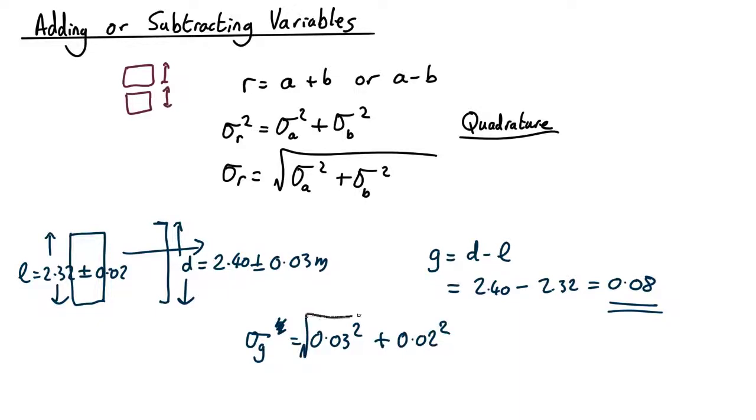So we can take the square root of both sides. And it turns out it comes in as 0.036. So roughly 0.04. As usual with uncertainties rounding to one significant figure.